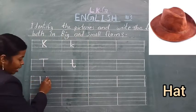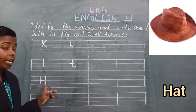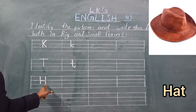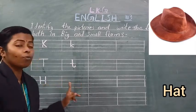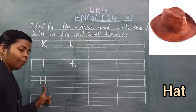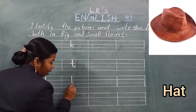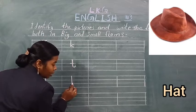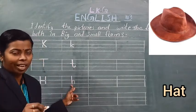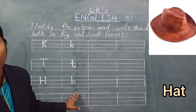Capital H kaise likhna hai? Standing line, again one more standing line, and a sleeping line in the middle. This is capital letter H. Yeh H hai, capital form mein likha hai. Idhar small form likhna hai — H ko chote akshar mein bhi likhna hai. Standing line from first to third line, then curve. This is small letter H. Capital H aur small letter H likh diya.